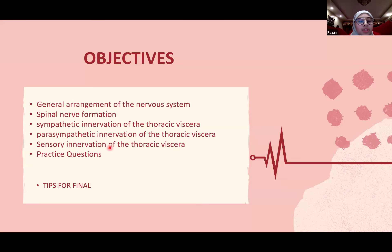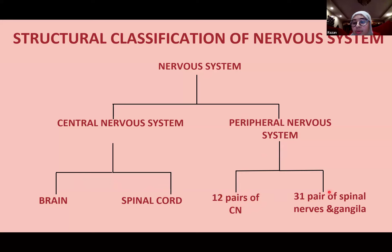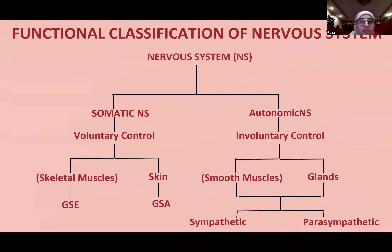Our objectives for today will end with practice questions and some tips for the final exam. Starting with the nervous system classification: structurally, we classify it as the central nervous system and the peripheral nervous system. The CNS is divided into the brain and spinal cord, and the PNS is divided into 12 pairs of cranial nerves and 31 pairs of spinal nerves with associated ganglia.